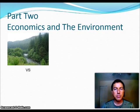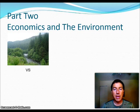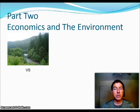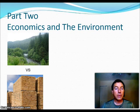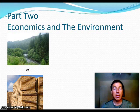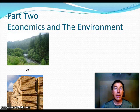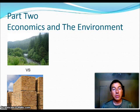Hi, this is Mr. Coates, and this is part two of chapter one from AP Environmental Science. This part is all about economics and how that influences what's going on in the environment. We have to look at how do we balance the environment with all the uses of those resources that we do. How do we balance the good of the forest versus the good of the lumber?